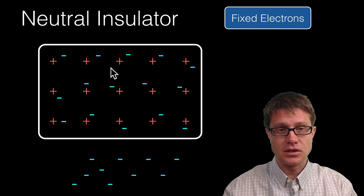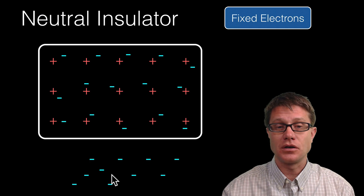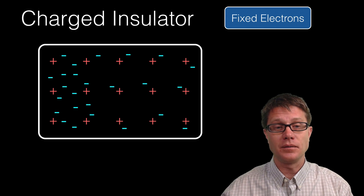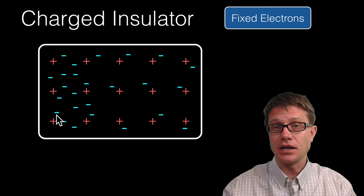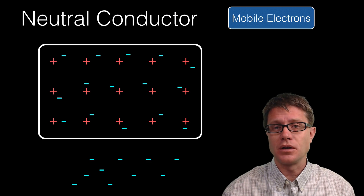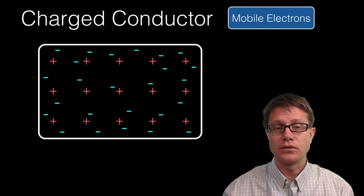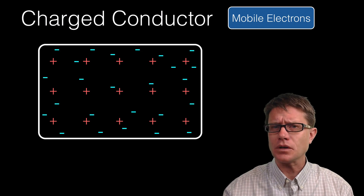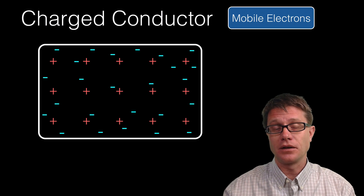If we have a neutral insulator and we add some negative charges to it, those electrons are fixed in position — they cannot move from atom to atom. So we get a charged insulator where the left side has a negative charge and the right side remains neutral. In contrast, if we start with a neutral conductor and add charges to the same location, those electrons can move — they spread out because they repel each other, and that charge ends up on the outside of the conductor.